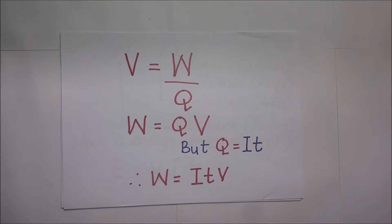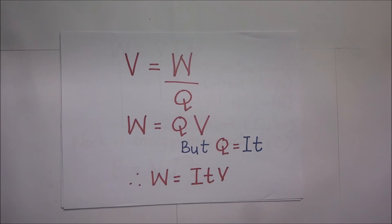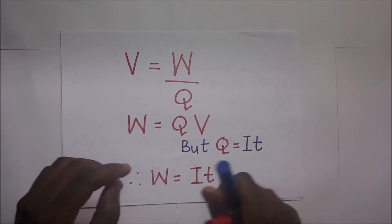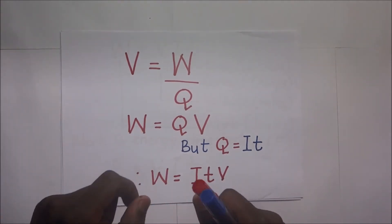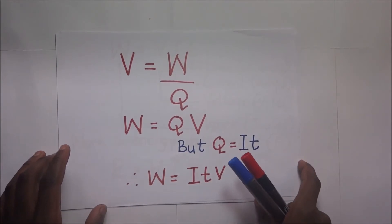As current flows through the load, energy is dissipated in the load. Remember, these charged particles, when moving, do work. This work is due to the potential difference across the terminals of the cell. When some of this electrical energy is dissipated, some energy is lost by the charged particles. The energy being lost by the charged particles is equivalent to the electrical potential energy lost as it moves through the potential difference that exists between the input and output terminals of the device — this is the energy dissipated as heat in the light bulb.